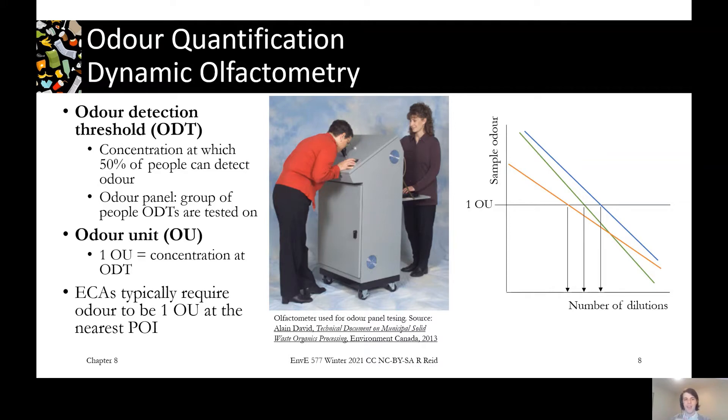Another way to measure that is with a dimensionless odour unit. One odour unit equals the concentration in PPMs or whatever unit at the odour detection threshold. For example, hydrogen sulfide - our noses are really sensitive to it. We can detect it at something like 10 parts per billion. So 10 parts per billion would be the odour detection threshold, and one odour unit for hydrogen sulfide would coincide with that 10 parts per billion.